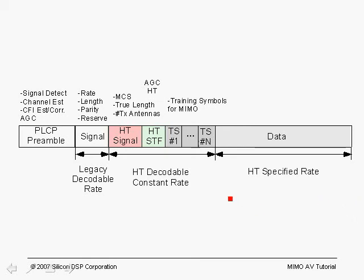Here we show the legacy packet. We have the legacy short training field, the legacy long training field which is 8 microseconds — these are the two long sequences which are duplicates of each other, including the cyclic prefix. We have the legacy signal field, which is 4 microseconds, and then the legacy data.